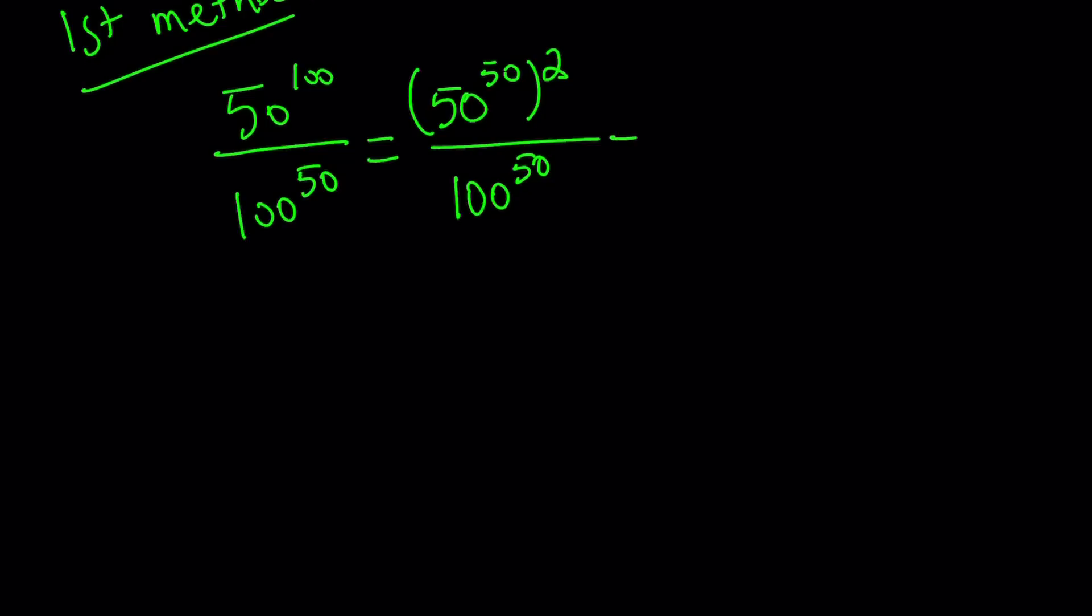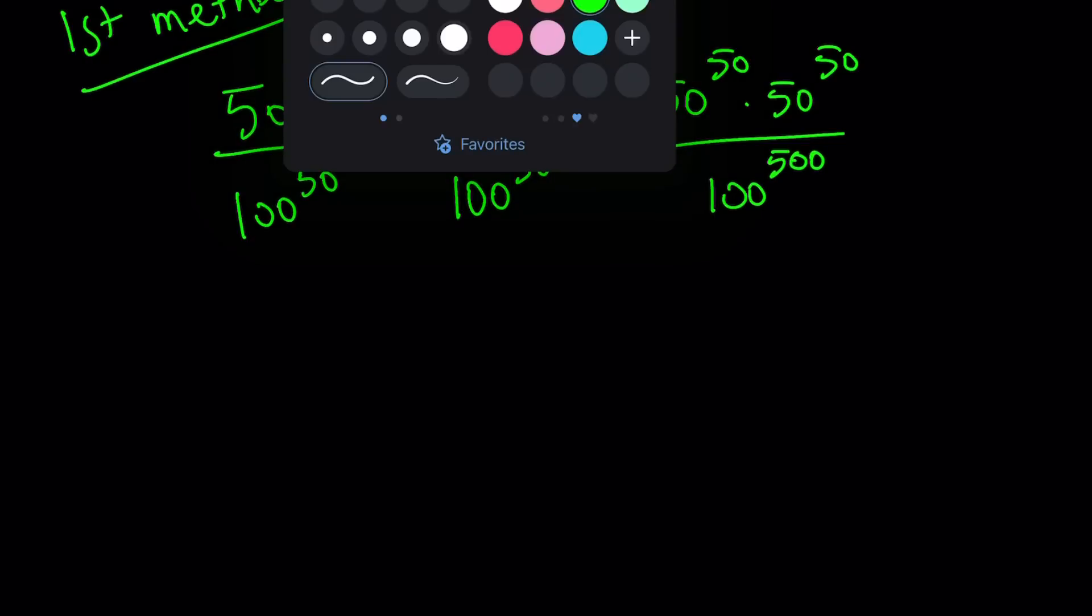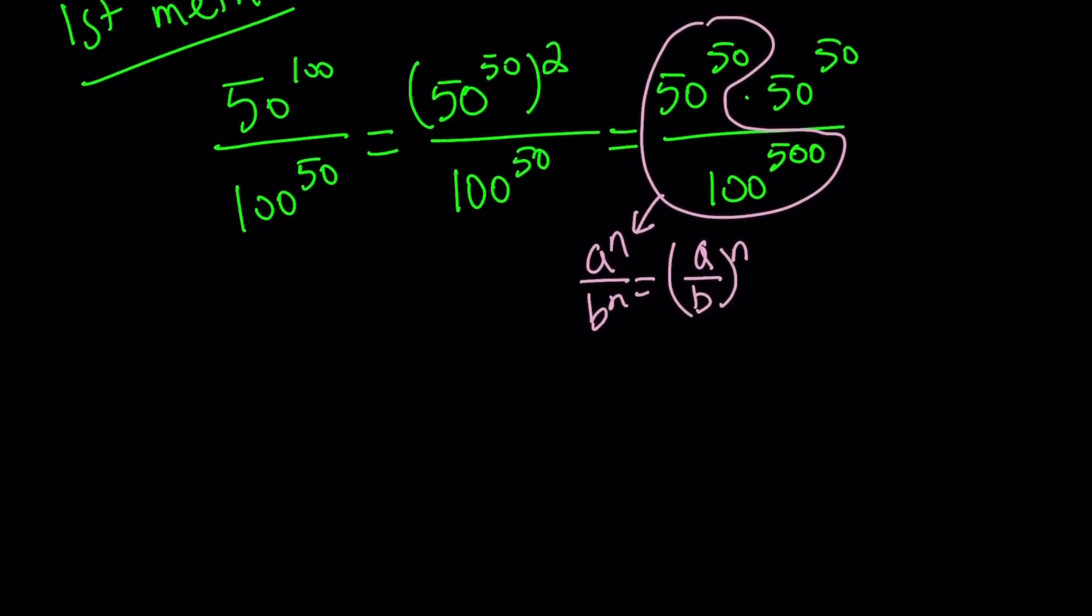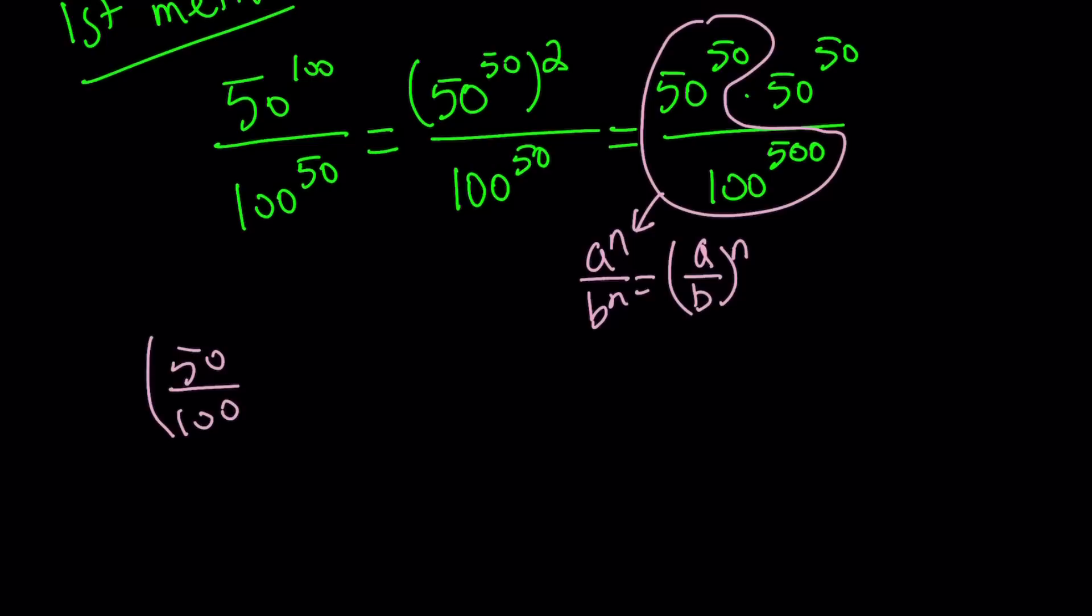So I'm going to go with the same exponents first. Now 50 to the power 50 squared can be written as 50 to the power 50 times 50 to the power 50, because x squared is x times x by definition. And this is going to be divided by 100 to the power 50. Now we're going to put these two together and separate our expression into two factors. We're going to use the rule a to the n divided by b to the n is a over b to the power n. So we can write this as 50 over 100 to the power 50, multiply by 50 to the power 50.